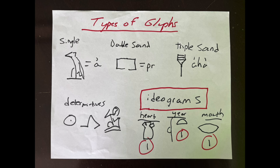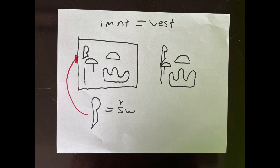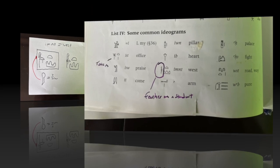Remember there are single sounds, double sounds, triple sounds, determinatives, and ideograms—the four major types of glyphs. Ideograms are the ones that represent actually what they are. Some of them are things we already know, like arm or per for house. Others are a little different and have to be sort of put together.